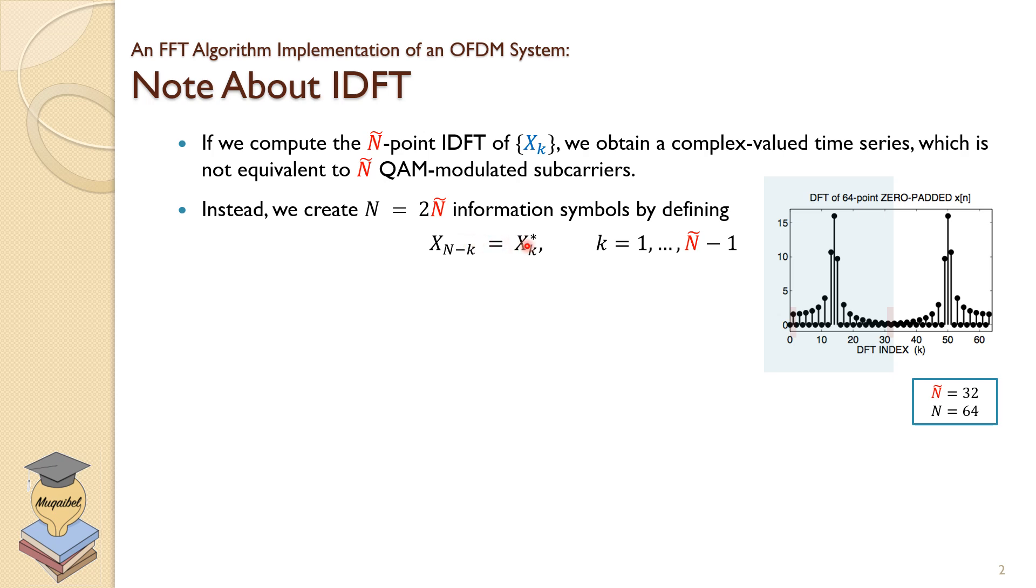We're going to make this condition: the added sequence, so X_{N-k}, should equal the conjugate of X_k. This one should equal the conjugate of this. So magnitude remains the same, and we have symmetry around the midpoint.